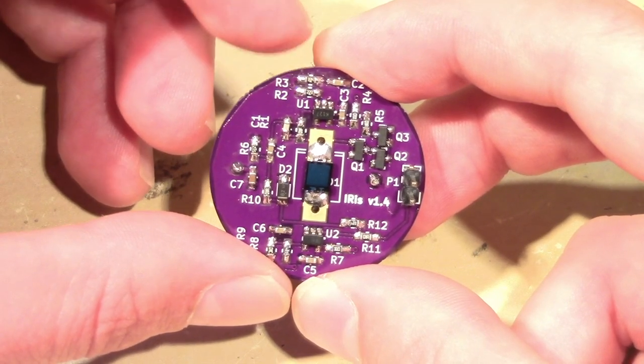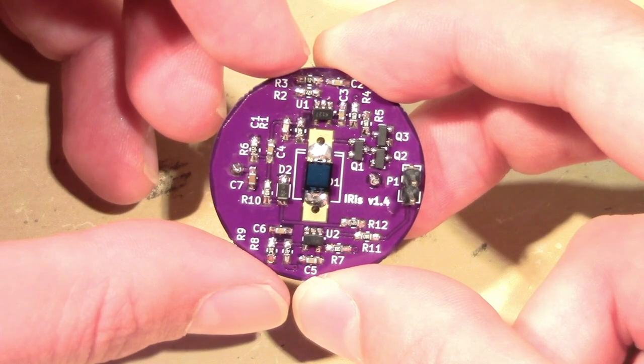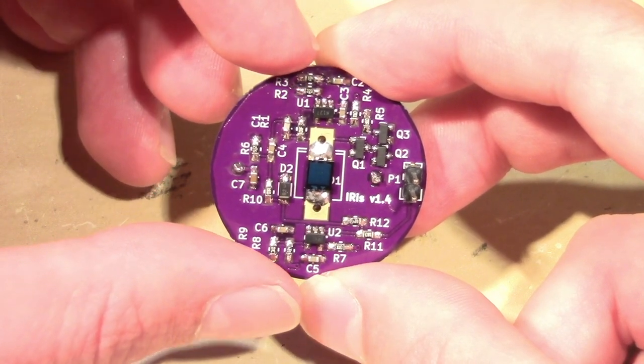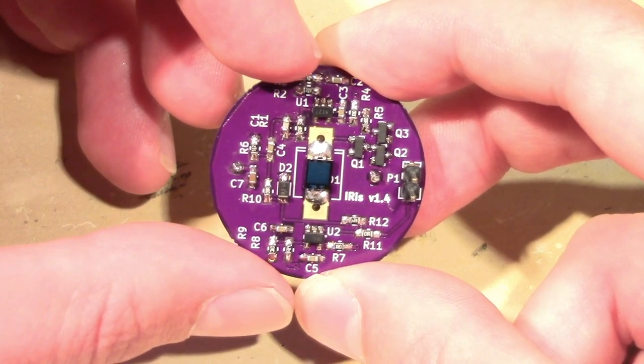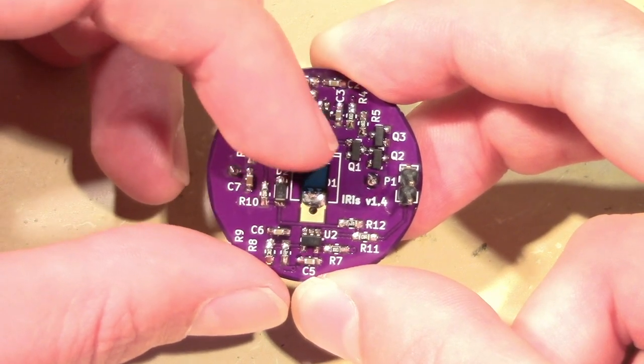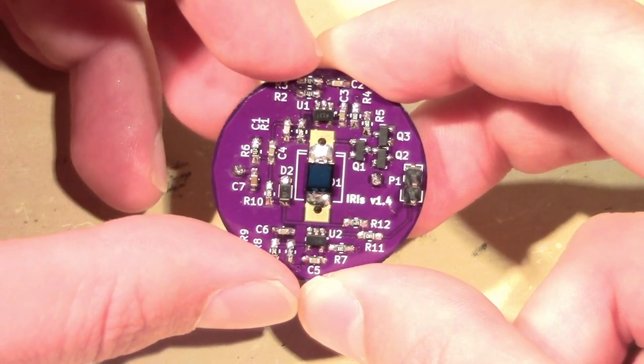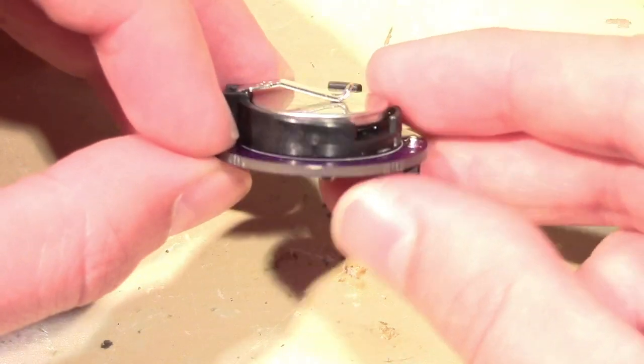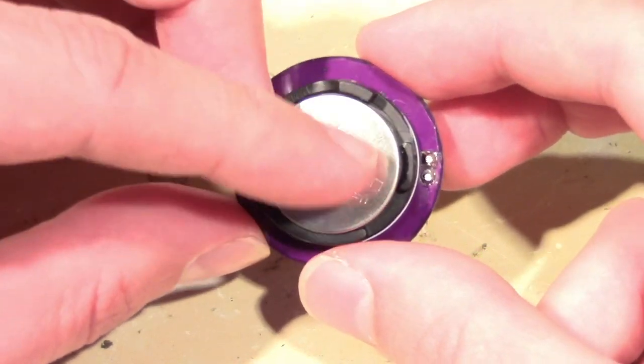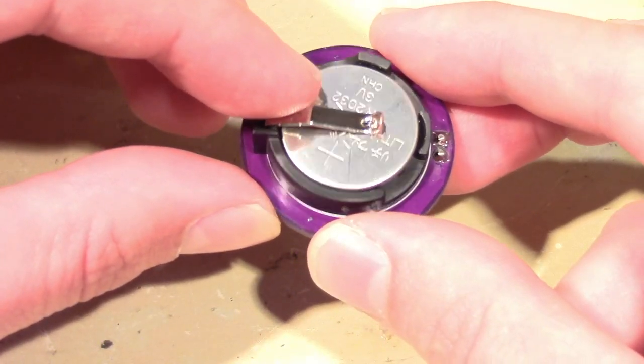Now the physical dimensions of the circuit board itself were chosen so that it would fit inside the lens cover of a riflescope that we had. And you just have the photodiode centered there in the middle of the board. And it's just big enough to fit a CR2032 battery on the back which provides power to the board.